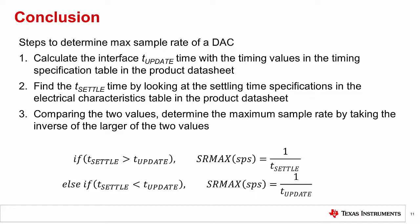Then, we must find the settling time value of the DAC output by finding the specification in the electrical characteristics table. Finally, we take the inverse of the larger of the two time periods to determine the max sample rate.